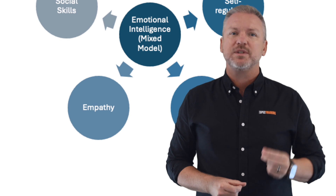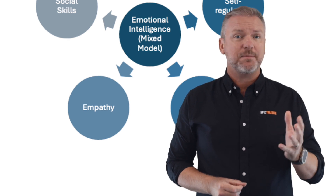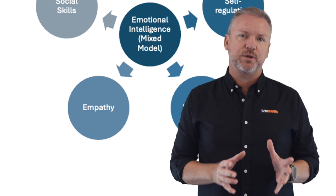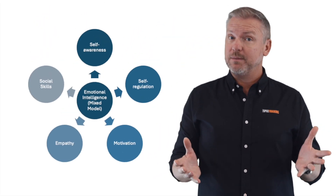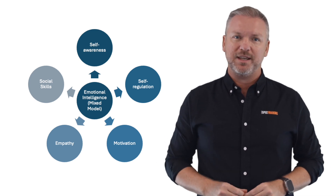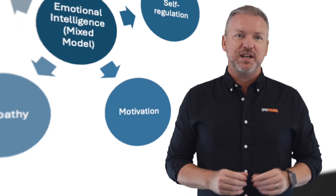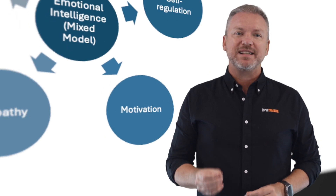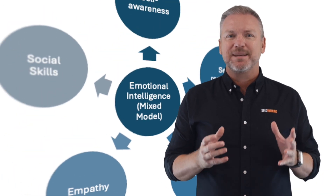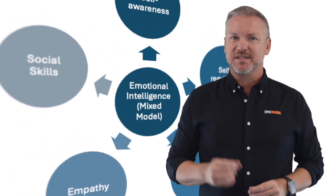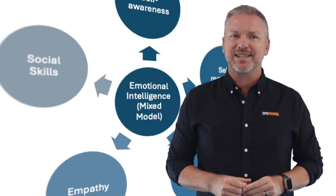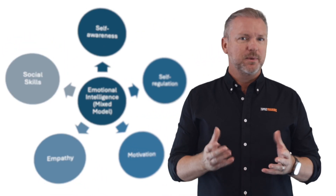Fourth is empathy: your ability to feel and consider other people's emotions, especially when making decisions. Do you feel sad when you see someone who's sad? Do you feel happy when someone around you is happy? If yes, then you have the ability to develop your empathy. And finally there's motivation, which is being aware of what motivates others and using positive strategies to encourage this. I think this model is best suited for the business environment, as there's an emphasis on empathy and motivation — two highly regarded skills within a team environment.